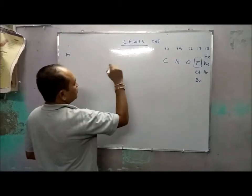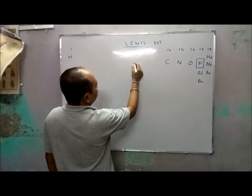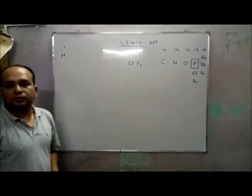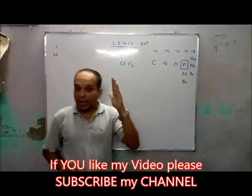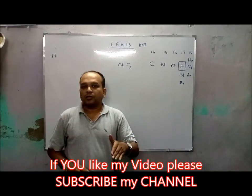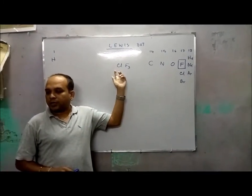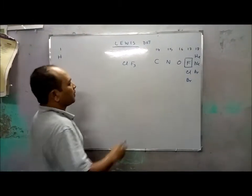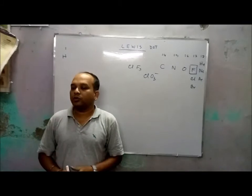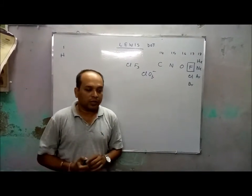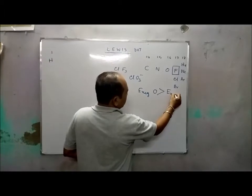For example, consider a compound like ClF3 — a compound between chlorine and fluorine. Which one will be the central atom? The central atom will be the element with less electronegativity. Among chlorine and fluorine, chlorine has less electronegativity, so chlorine will be the central atom.